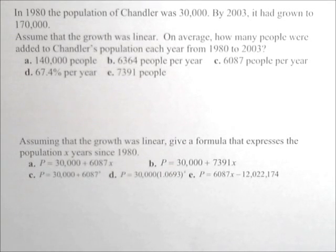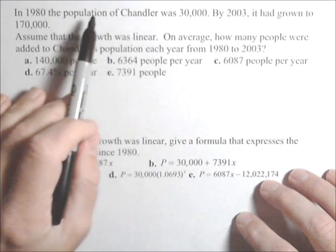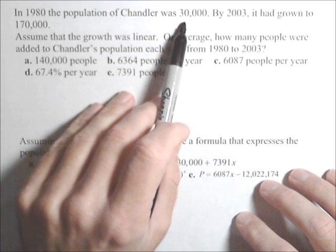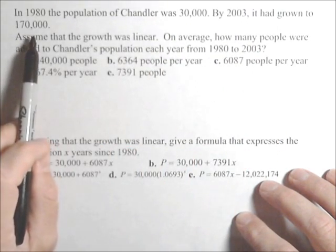Okay, in this video we have two populations. In 1980, the population of Chandler was 30,000. By 2003, it had grown to 170,000.